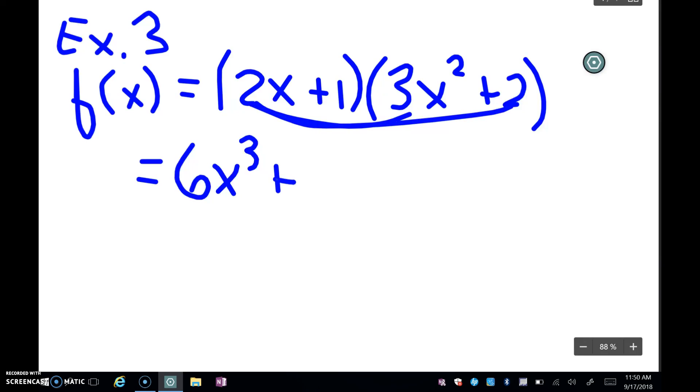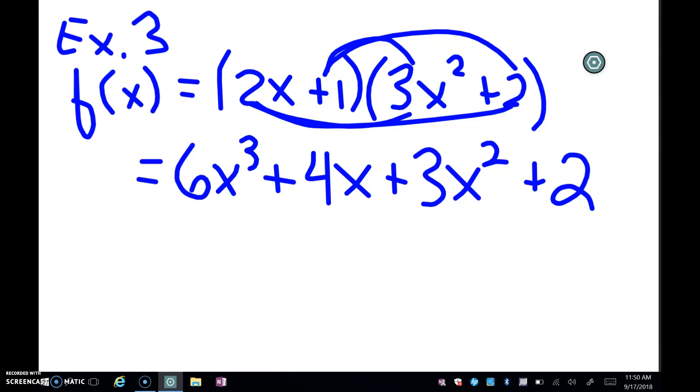2x times 2 is 4x. 1 times 3x^2 is 3x^2. And 1 times 2 is 2. I don't see any terms that I can collect. So I'm going to go straight to the derivative here.